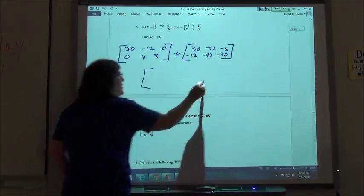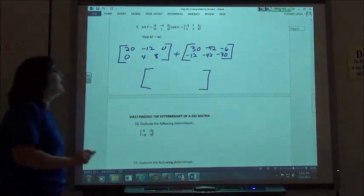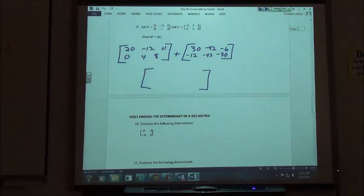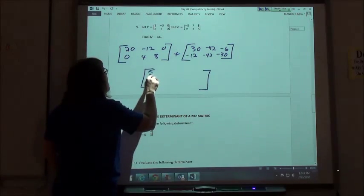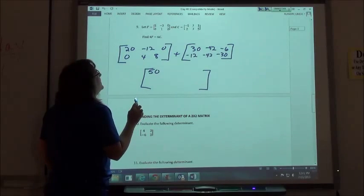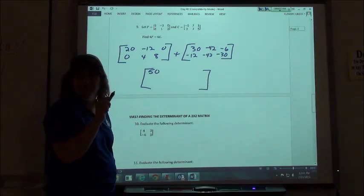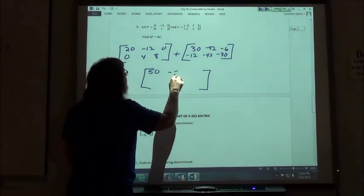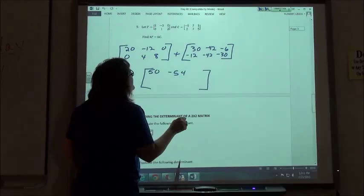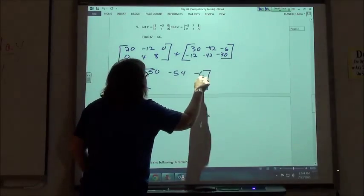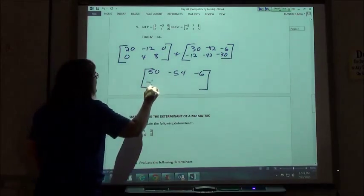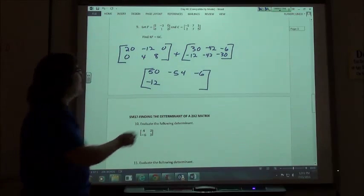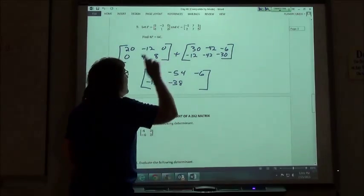And then we're going to add the ones in the same spots. So we're going to get 50, negative 54, negative 6, negative 12, negative 38, negative 22.